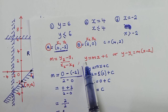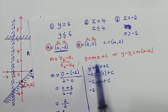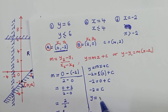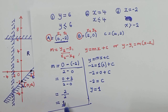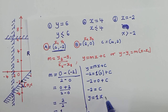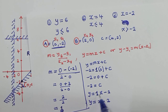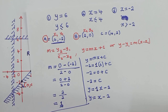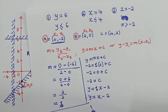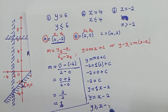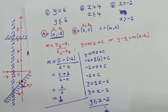After finding c, we plug it back in. So y = mx + c becomes y = (1)x + (−2), which simplifies to y = x − 2. To show the inequality, we say y is greater than or equal to x − 2. That is our solution for this line.